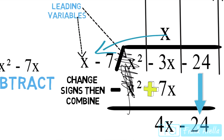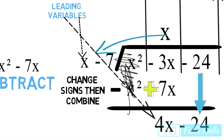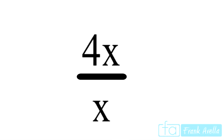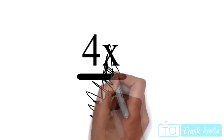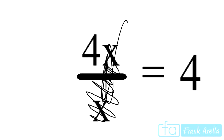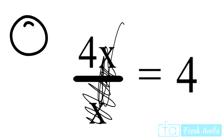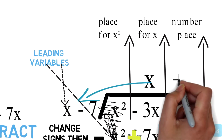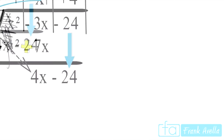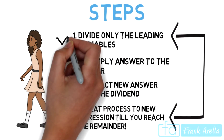Back to Step 1 — divide leading variables. Our leading variables have changed: we now have 4x and x, so 4x divided by x. The x's cancel each other out, leaving us with simply 4. Since 4 is a constant, it gets placed over the numbers placeholder. That completes Step 1 for the second time.